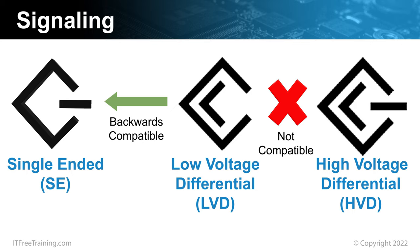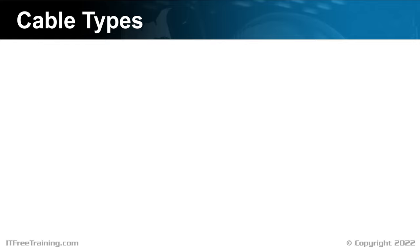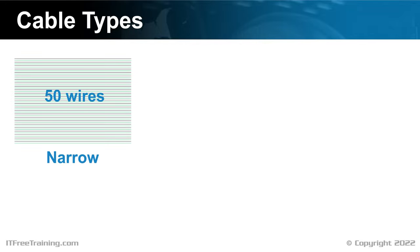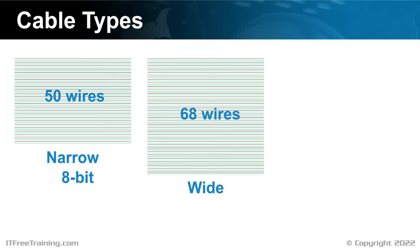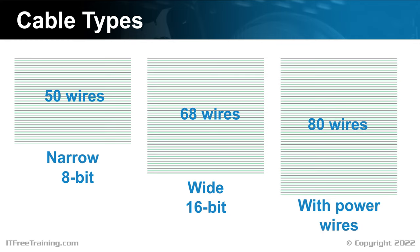Now that we understand the basics of signaling, let's have a closer look at the differences in the types of cables. There are a lot of different cables out there for traditional SCSI when you start looking at the different plugs on the end. However, these can be broken down into three basic types. The first type is a 50-pin connector, which is often referred to as narrow. This type of cable is limited to transferring eight bits at once. The next cable type has 68 wires, often referred to as wide, and can transfer 16 bits at once in parallel. The last cable has 80 pins and includes power wires. Although there are many different types of plugs for SCSI, they essentially all work with these numbers of wires.